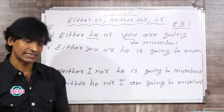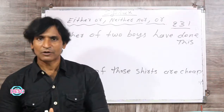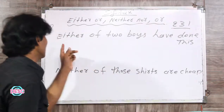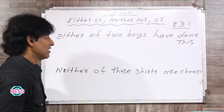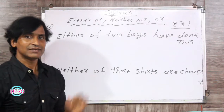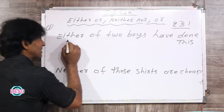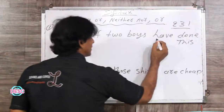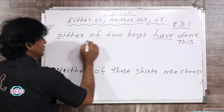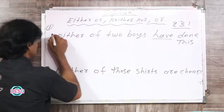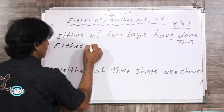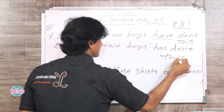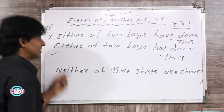अभी हम rule number four देखते हैं: यदि sentence में either या neither का प्रयोग हो, तो उनके साथ singular verb या pronouns का इस्तमाल होता है. जैसे: 'Either of two boys have done this' — this is wrong, because यहाँ पर plural verb 'have' का इस्तमाल किया है. इसका सही होगा: 'Either of two boys has done this' — this is right, this is correct.